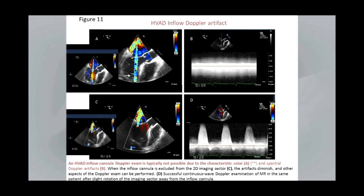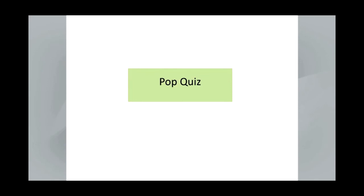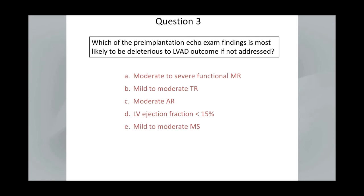This shows imaging of the HVAD in the operating room. It has a particular spectral Doppler artifact — two-dimensional imaging is possible, but it's not possible to actually get the flow inside the inflow cannula. However, if you can adjust your imaging plane into any plane that doesn't include the inflow cannula, your other two-dimensional color and spectral Doppler imaging can be performed.